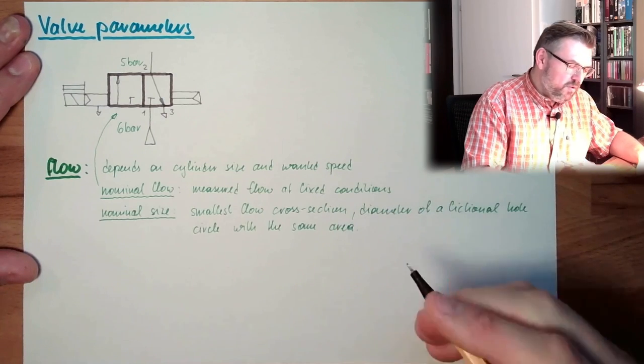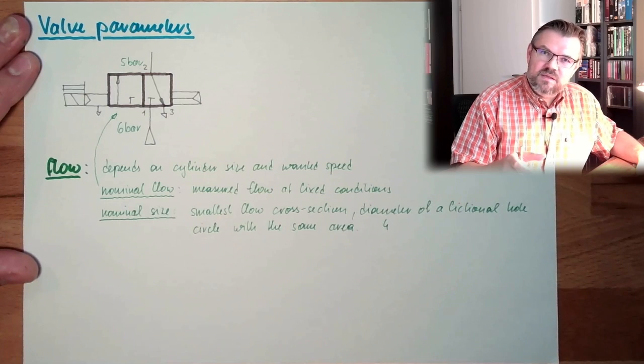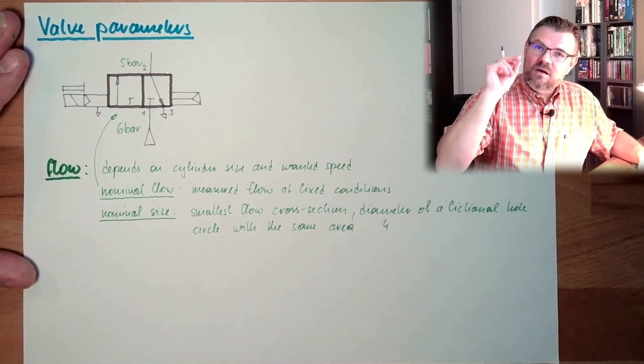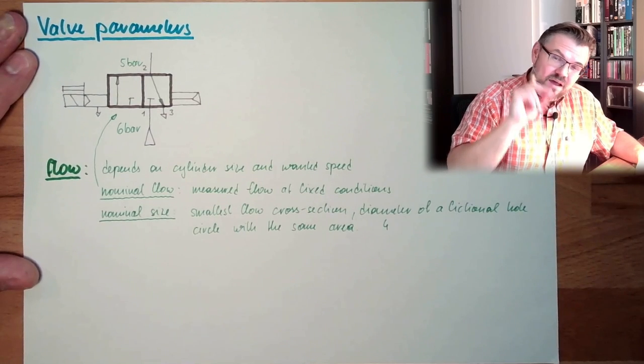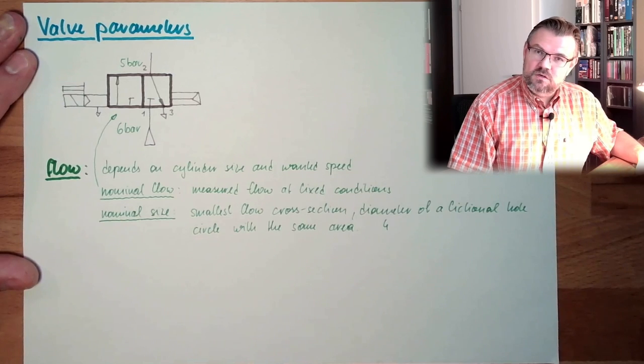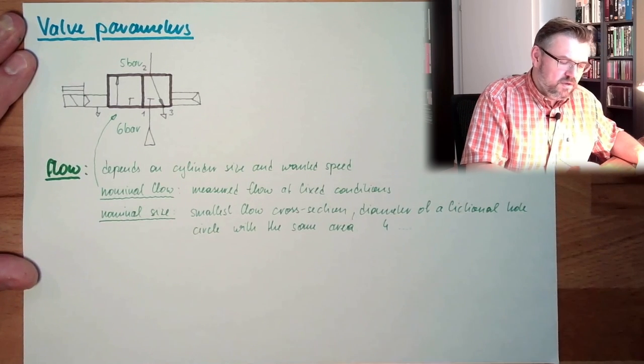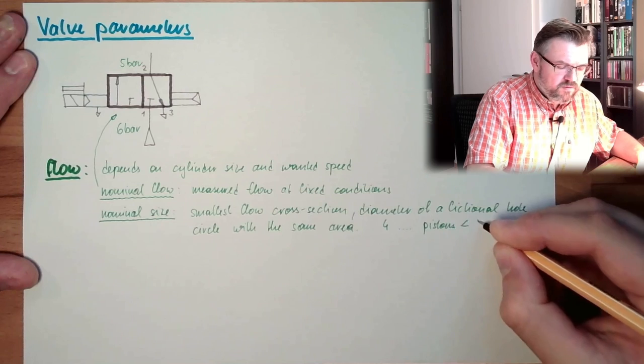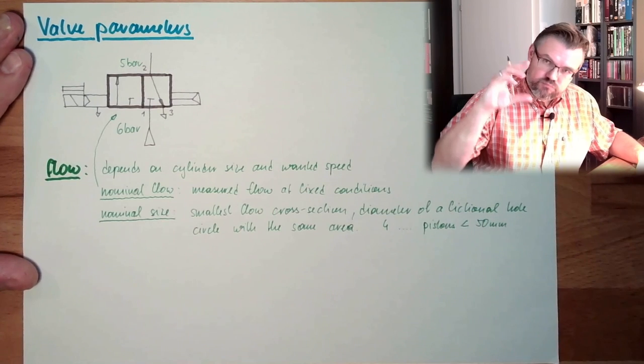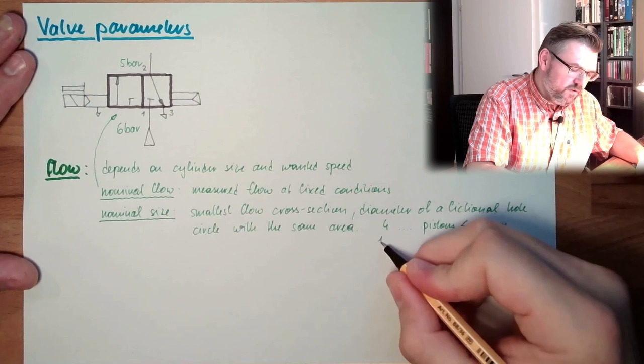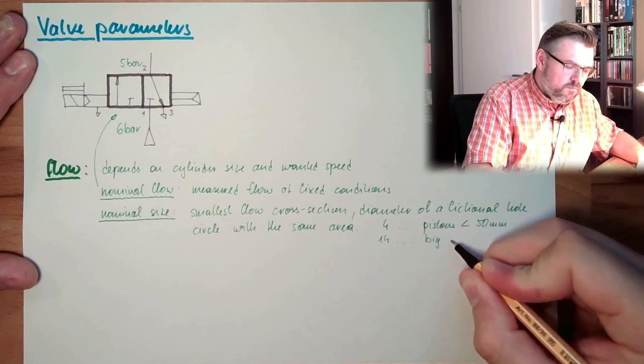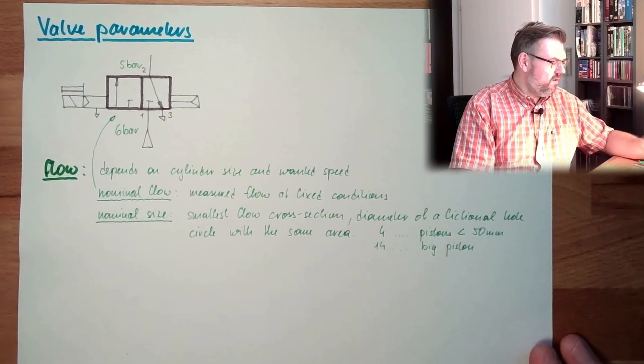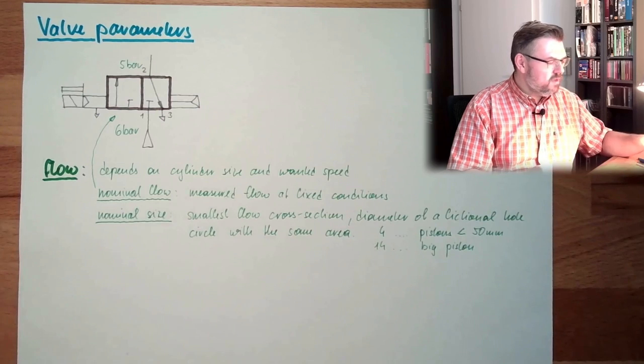So, if we have nominal size number 4, then it's 4 millimeters. You do not find this 4 millimeters somewhere, there is no hole with 4 millimeters. It just means a 4 millimeter round hole would have the same area as the smallest flow cross-section. And this 4, nominal size 4, they are usually for, in the pneumatic world again, pistons smaller than 50 millimeters. And there are 14, for instance. This is then for big pistons, big size. In this area we usually are. So flow, this is one big topic.